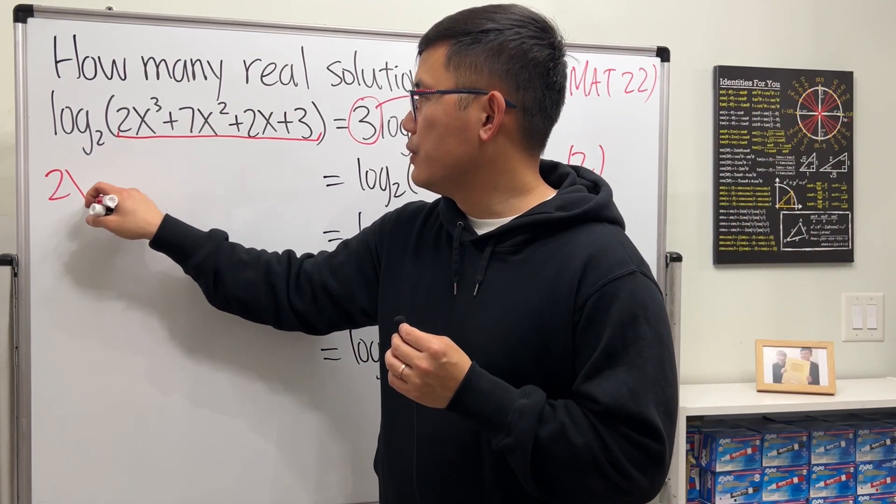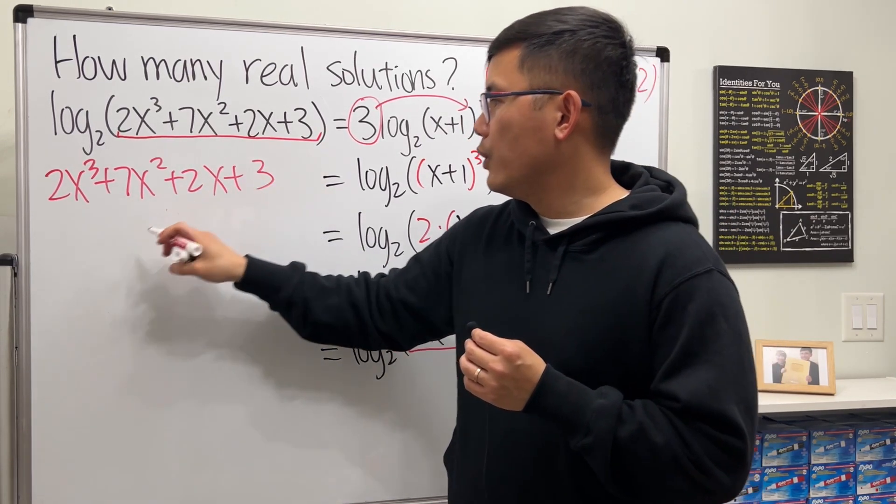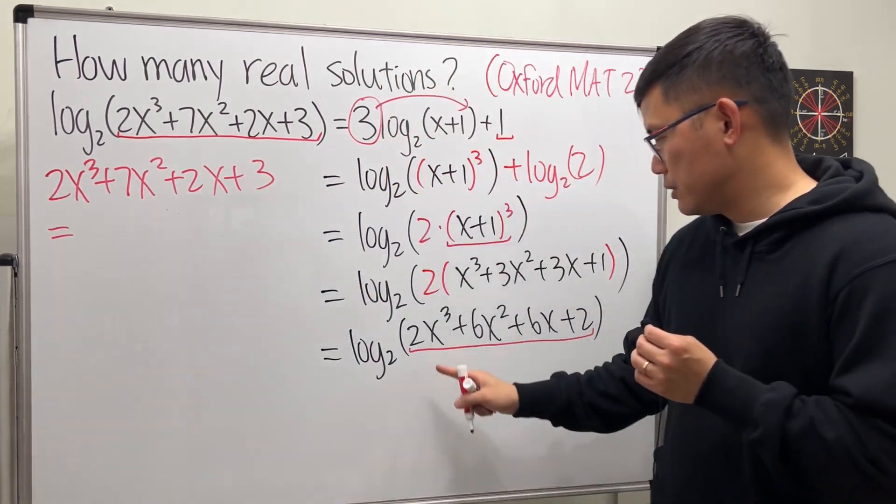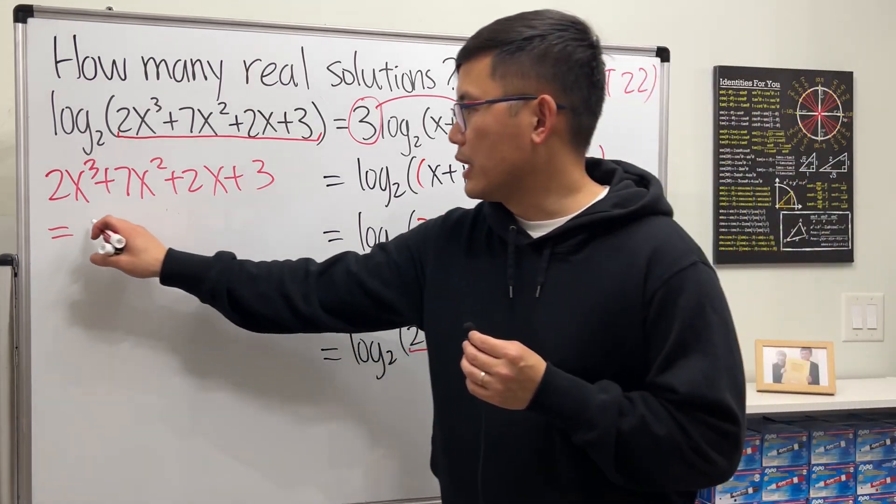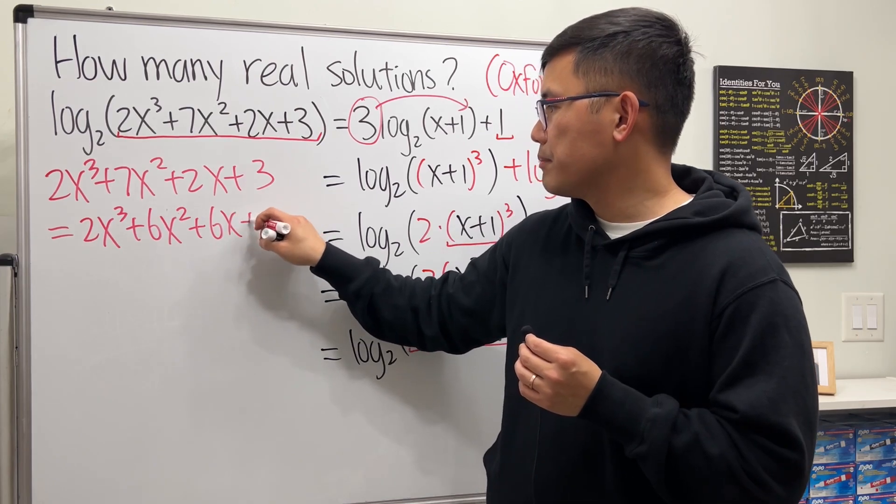So here we have 2x³ + 7x² + 2x + 3, just go ahead and make it equal to this right here. So we have 2x³ + 6x² + 6x + 2.